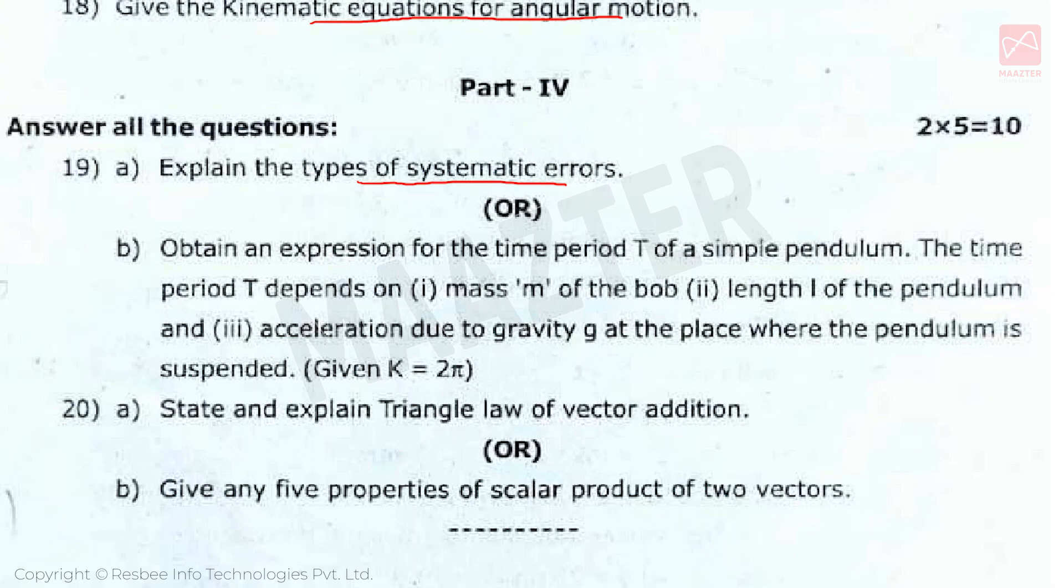The optional question is: Obtain an expression for the time period T of a simple pendulum. The time period T depends on first, mass m of the bob, second, length l of the pendulum, and third, acceleration due to gravity g at the place where the pendulum is suspended. This is first unit level example problem. In the problem, since T depends on these, T is directly proportional to mass m power a, and length l power b, and acceleration due to gravity g power c. The formula to use is T = 2π√(l/g). Substitute in the formula to get the answer.